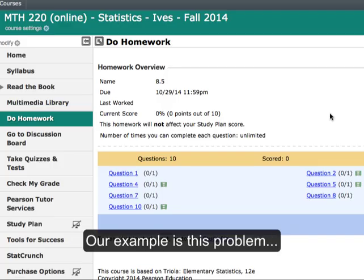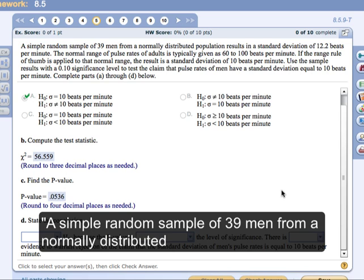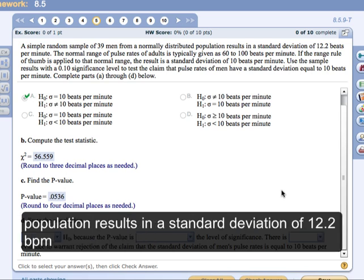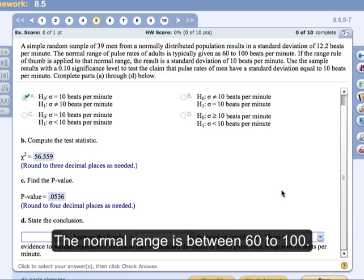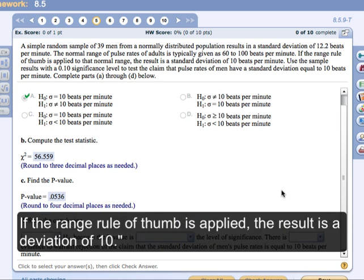Our first example is this problem. A simple random sample of 39 men from a normally distributed population results in a standard deviation of 12.2 beats per minute. The normal range of pulse rates is typically given as between 60 to 100. If the range rule of thumb is applied, the result is a standard deviation of 10.